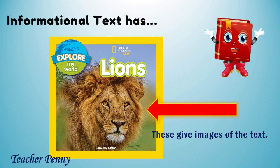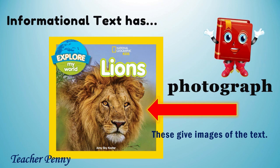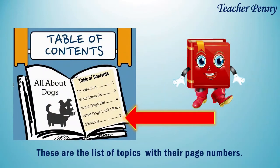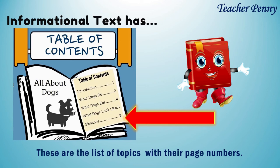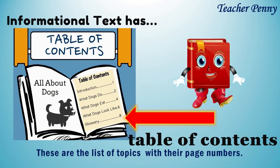Then, we have the photograph feature of informational text. This gives images of the text. Informational text also has the table of contents. These are the list of topics with their page numbers.